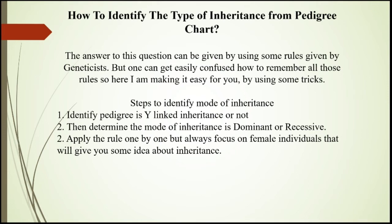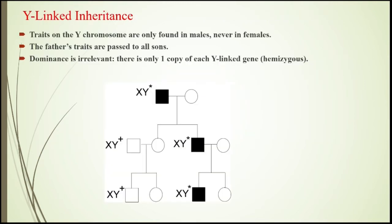Third, apply the rules one by one after you have determined whether it is dominant or recessive, and generally focus on females — how affected or normal females transfer their inheritance. For Y-linked inheritance: if in a pedigree chart the affected individuals are only males, then it is Y-linked inheritance.